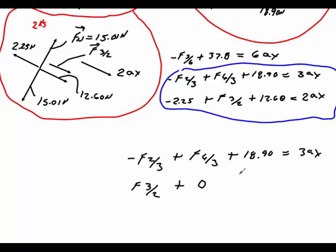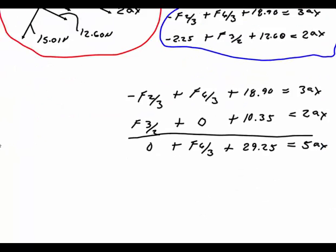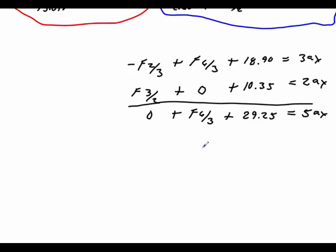I have 0. I have no 6,3s. Now let's do this one. I'm going to need to combine those. 12.6 minus 2.25 plus 10.35. I'll go ahead and add those together. Again, I'm going to lose these. That gives me 0 plus F_6,3, plus 10.35 plus 18.9, 29.25. So I'll solve for F_6,3 going to equal to 5ax minus 29.25.